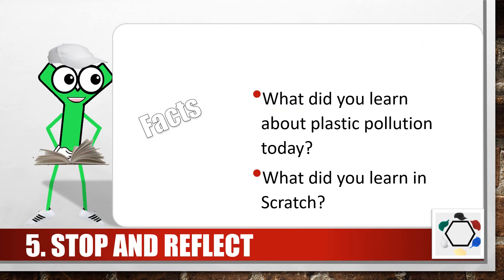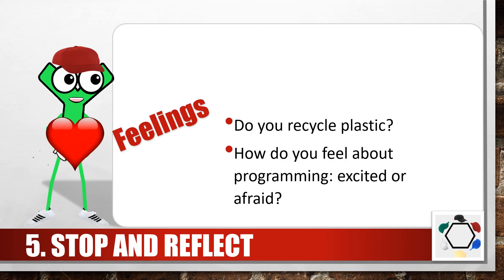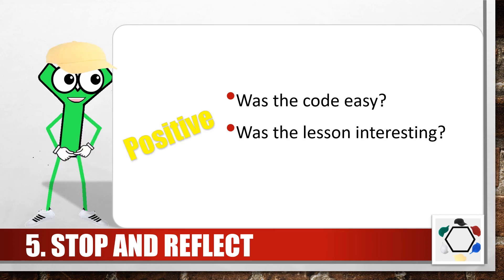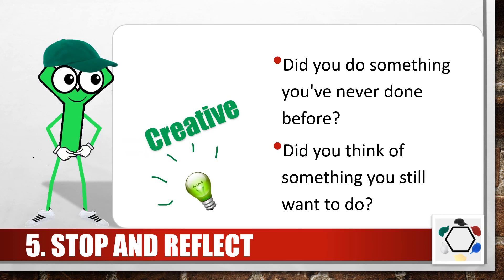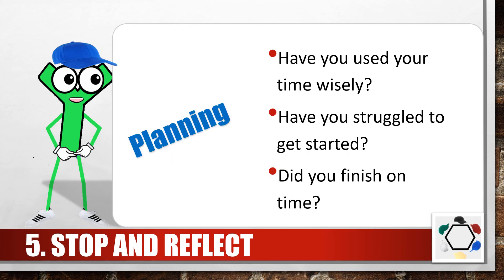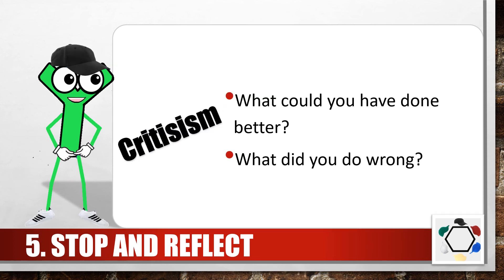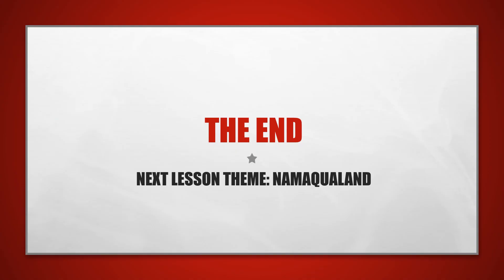Lastly, reflect on what you've just learned before we tackle the next lesson. Put on your white hat and think about facts you've learned today. The red hat to think about emotions you experienced. The yellow hat to make positive comments. The green hat for any creative thoughts. The blue hat to reflect on your planning and time management. And the black hat to make any negative comments. In the next lesson you're going to use five more blocks in Scratch to make the flowers in Immaquiland blossom. Until then, goodbye!